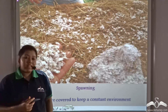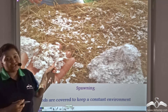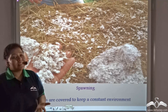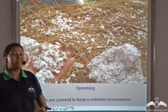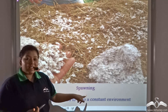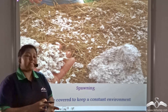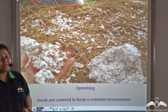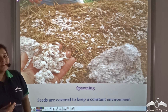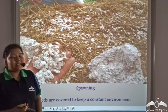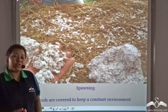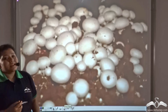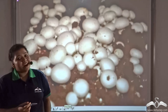Next, the seeds of mushroom containing the mycelium are spread on the compost — this process is known as spawning. Finally, these seeds are covered so that a constant environment can be maintained. Within a few days, the mushroom seeds grow into mushrooms and the button mushrooms can be harvested.